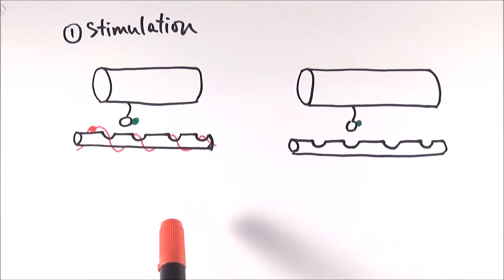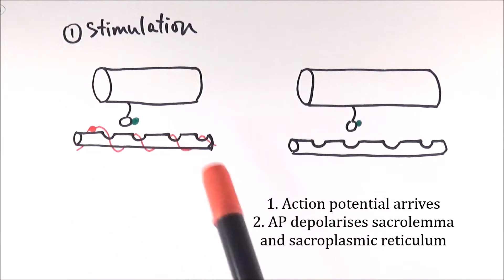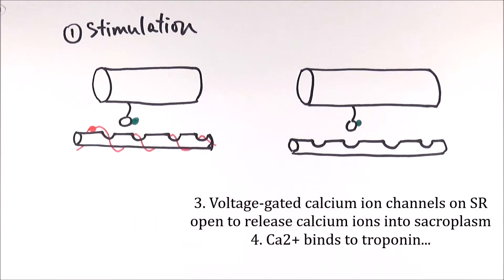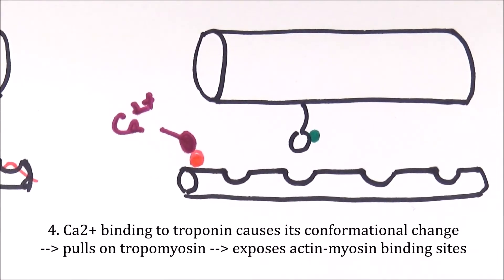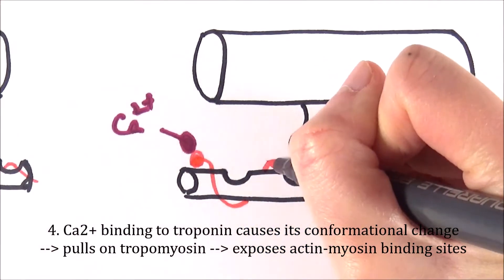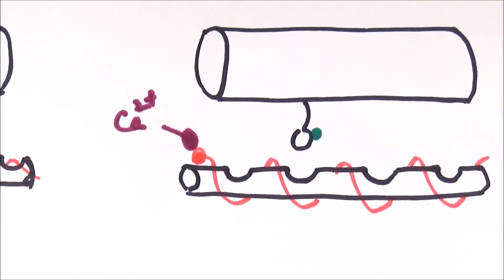Once the action potential arrives, it will depolarize the sarcolemma, the plasma membrane on the outside. This also in turn depolarizes the sarcoplasmic reticulum, and it will then open the voltage-gated calcium channels on the surface of the sarcoplasmic reticulum. This will lead to calcium ions being released from the sarcoplasmic reticulum, and they will then bind to the troponin. Because of this binding, the tropomyosin will be pulled along by the conformational change, exposing the actin-myosin binding site. And that is the first step of stimulation.